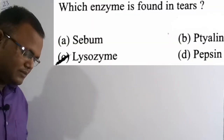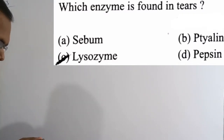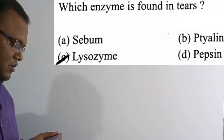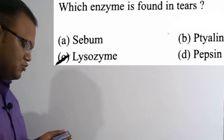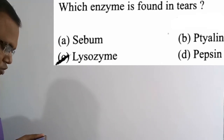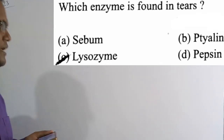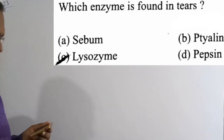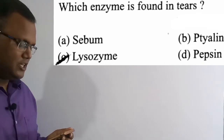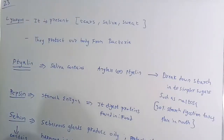Now we are going to solve the 23rd question. Which enzyme is found in tears? Option A: sebum. Option B: ptyalin. Option C: lysozyme. Option D: pepsin. The correct answer is option C — lysozyme.